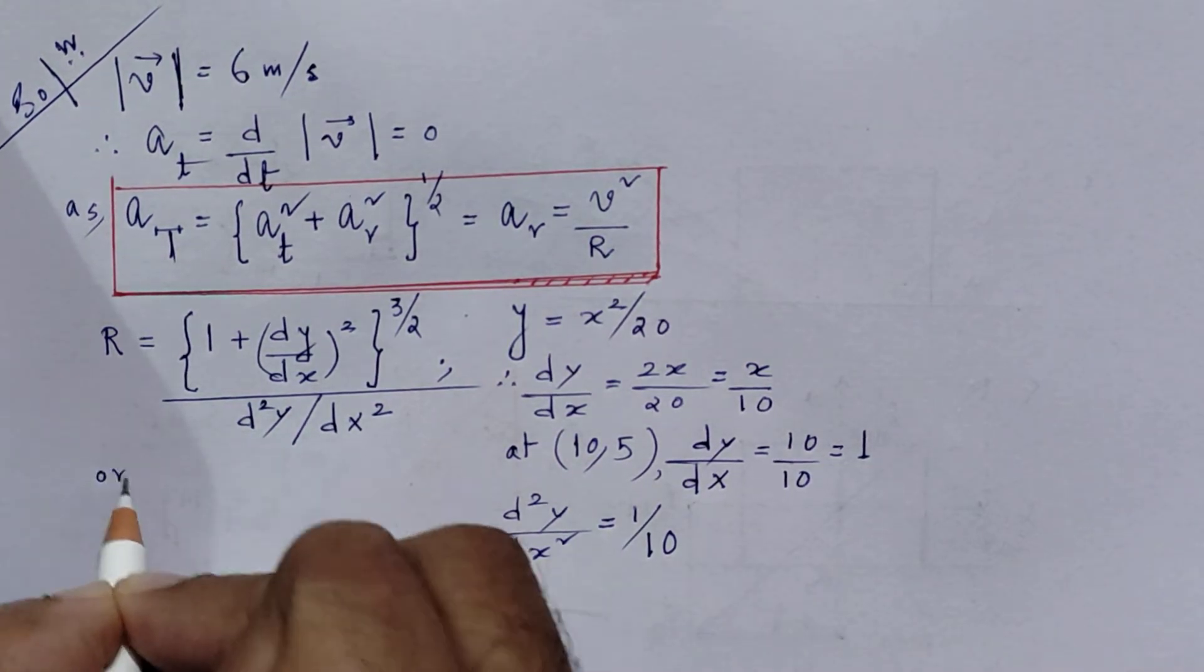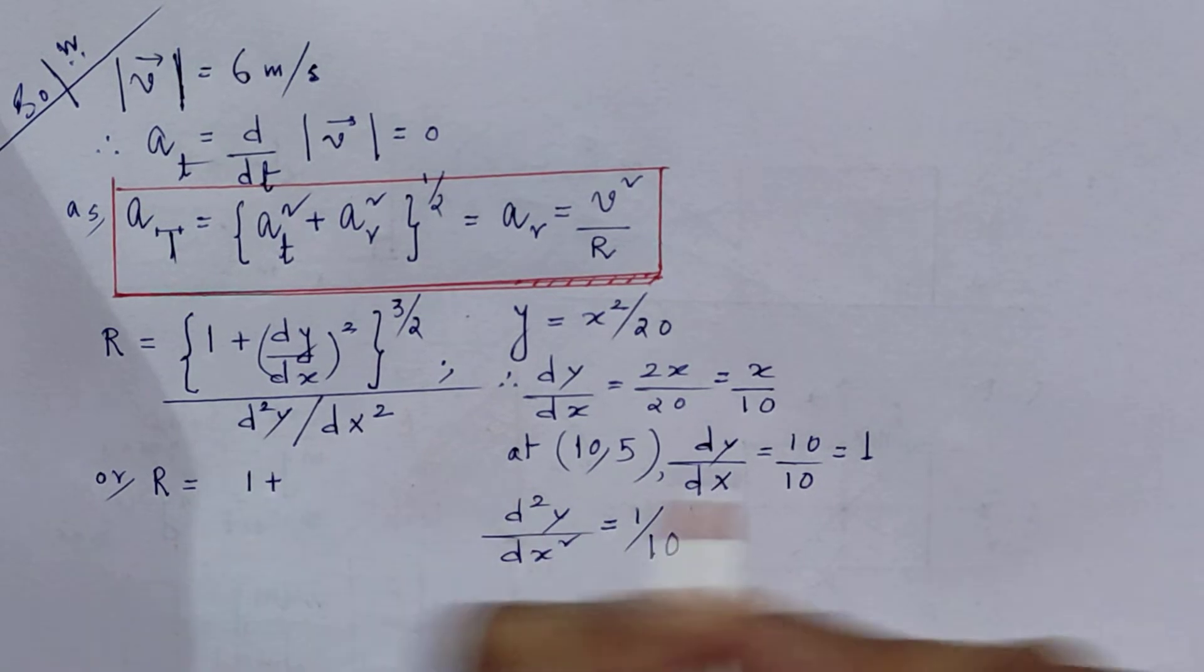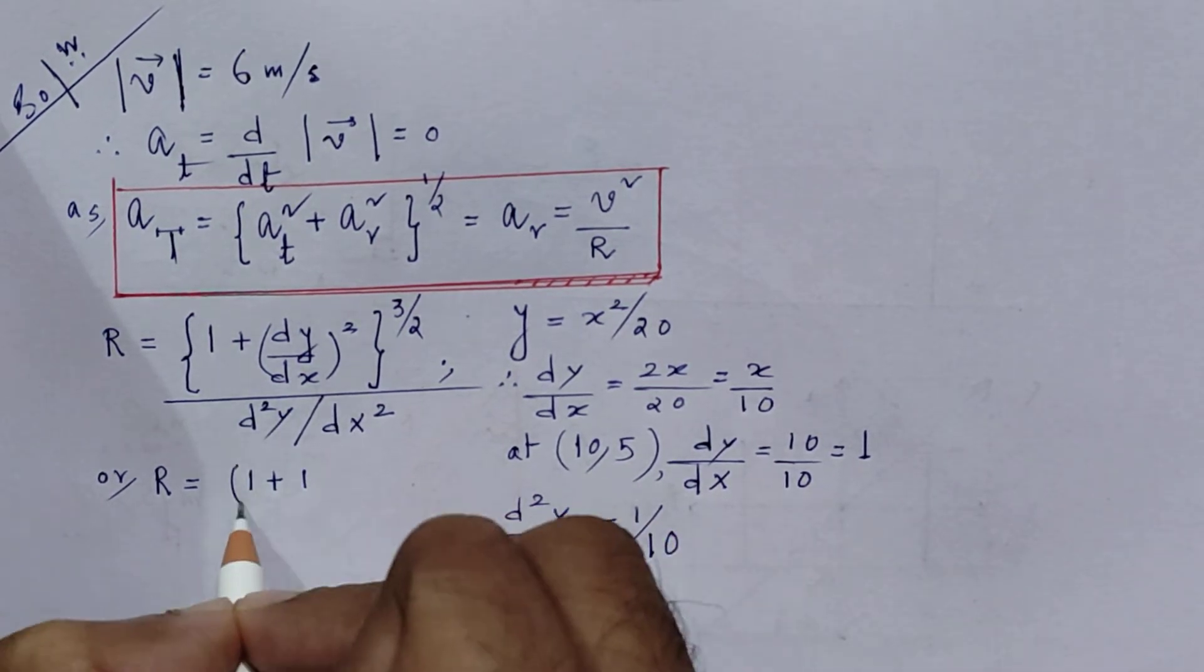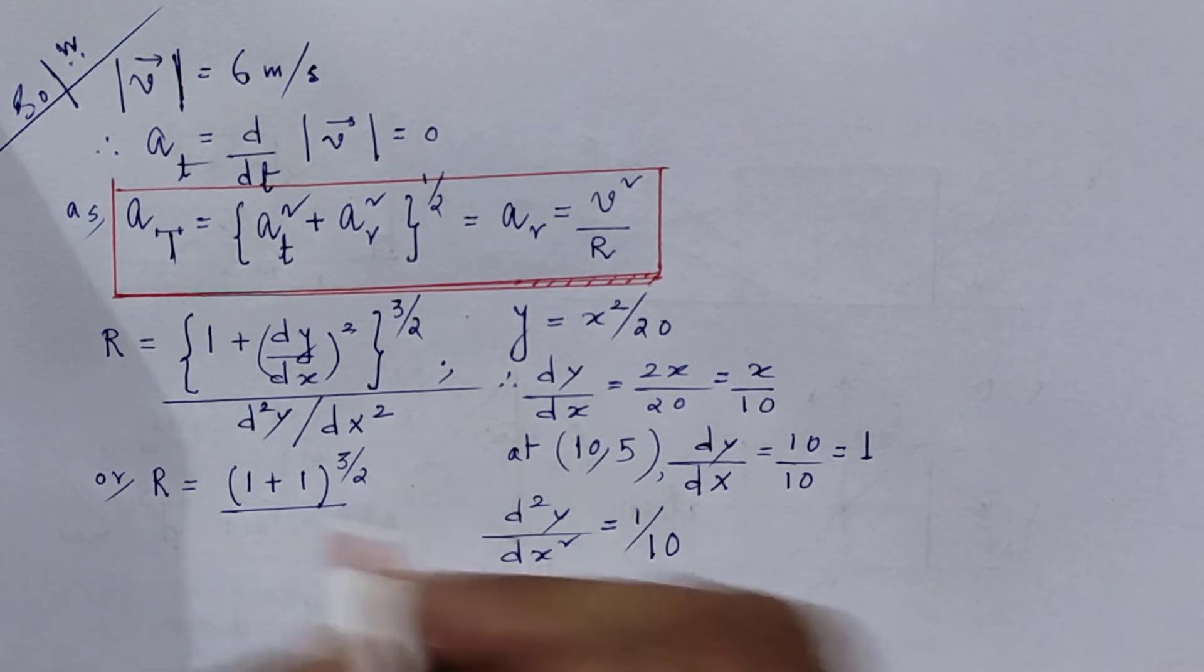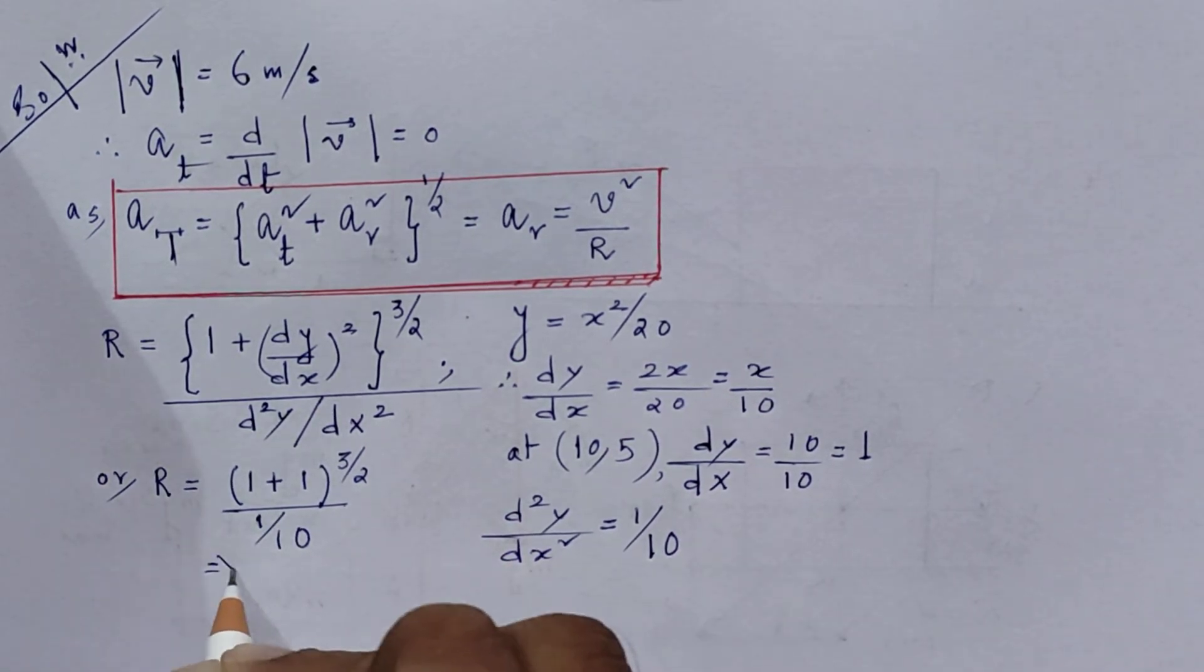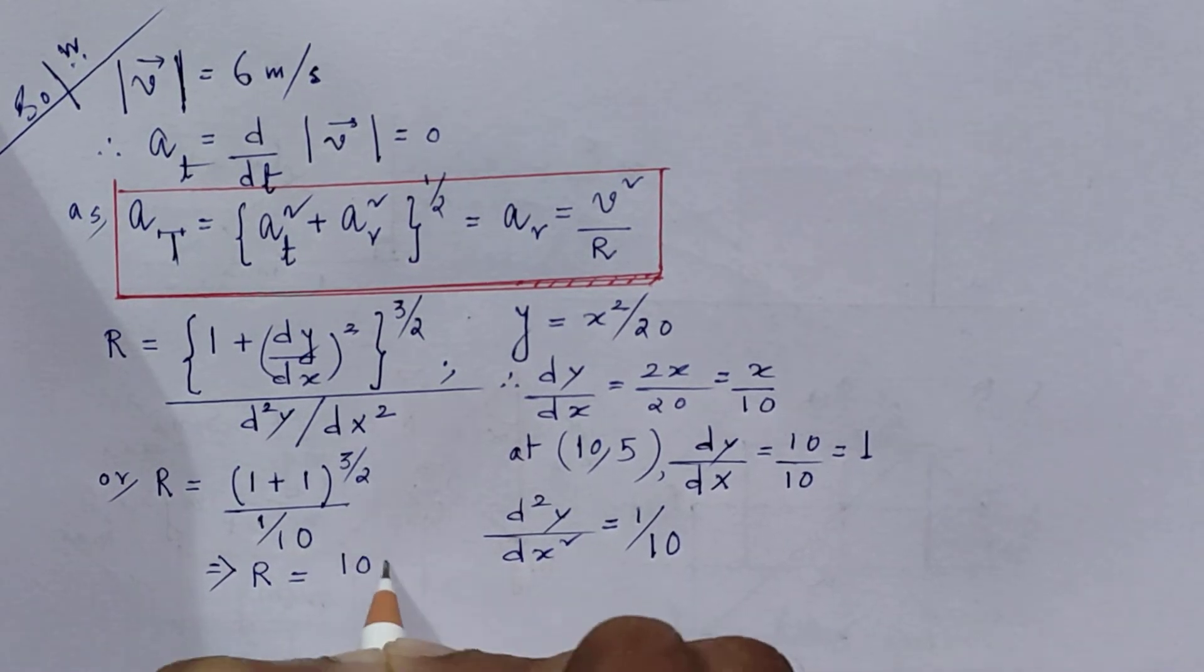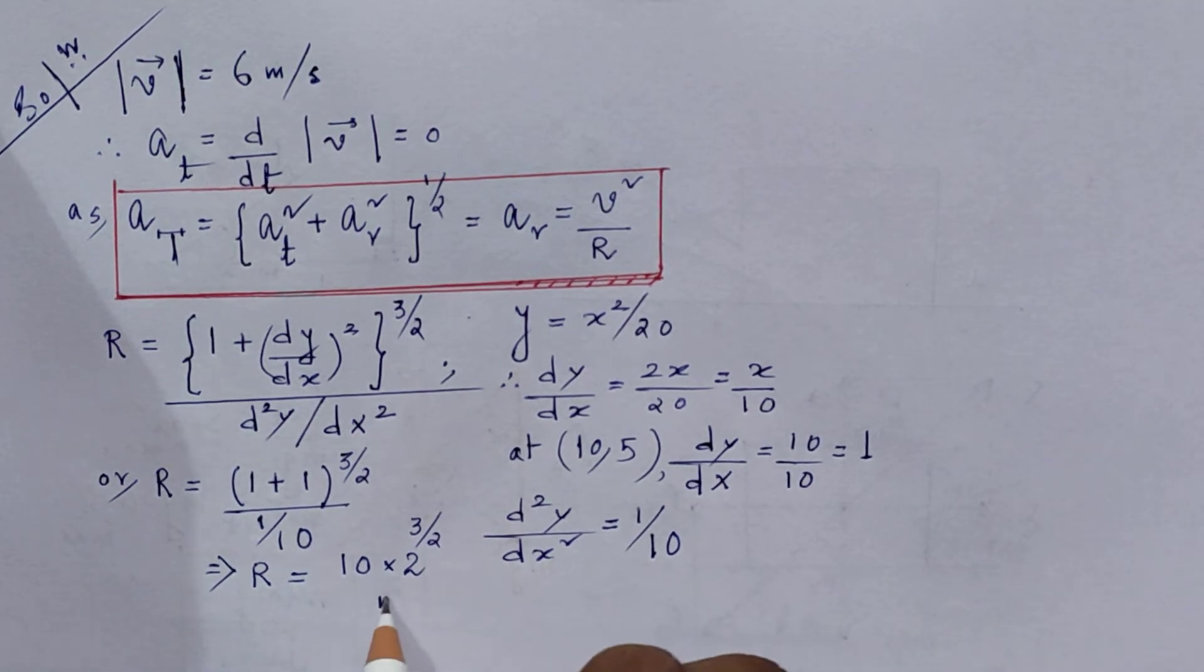So what we can say, the radius of curvature R, that is equals to (1 plus dy/dx)... dy/dx is 1, whole to the power 3/2 divided by d²y/dx² which is 1 by 10. So therefore capital R is 10 times 2 to the power 3/2 meter.